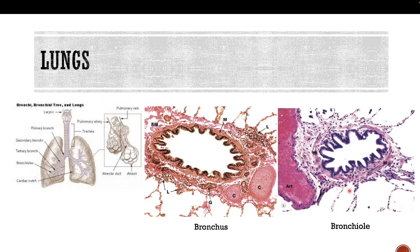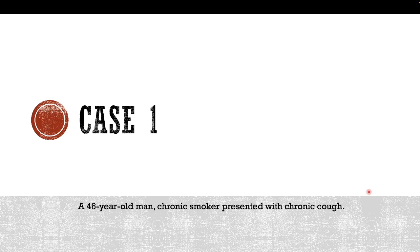The bronchiole is located distally and is almost similar to the bronchus, but in the bronchiole you do not have cartilage. Usually you have an adjacent vascular supply — an artery adjacent to the bronchiole — and of course you have the air spaces.